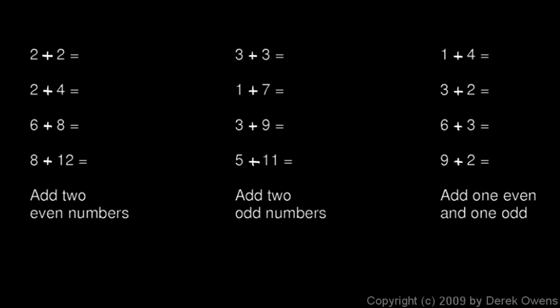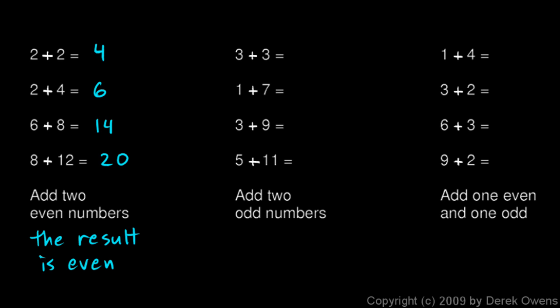These are really simple examples — just take note of the pattern that appears. 2 plus 2 is 4; both of these numbers are even and the result is even. The same thing happens here: 2 plus 4 is 6, 6 plus 8 is 14, and 8 plus 12 is 20. In all of these cases we're adding two even numbers and the result is even.